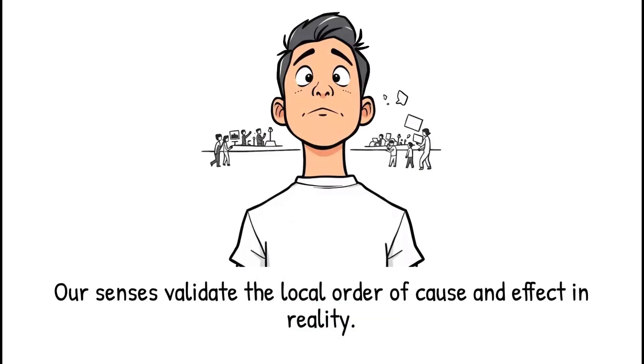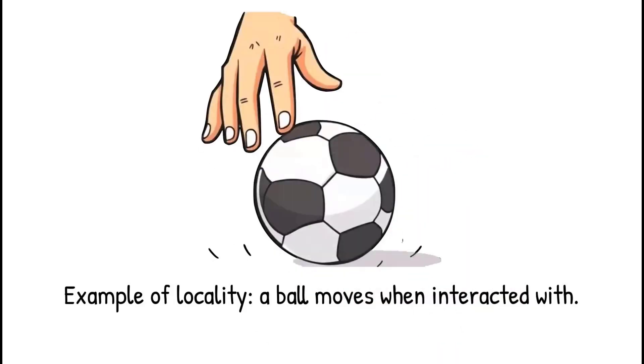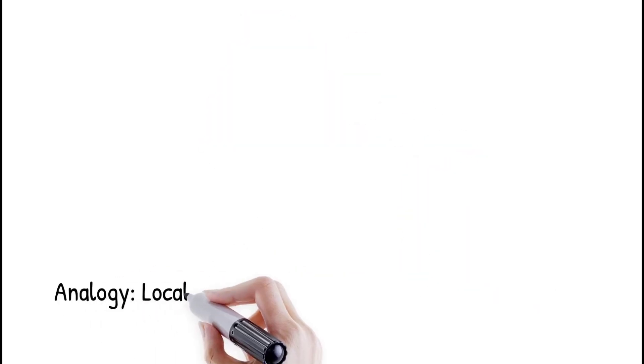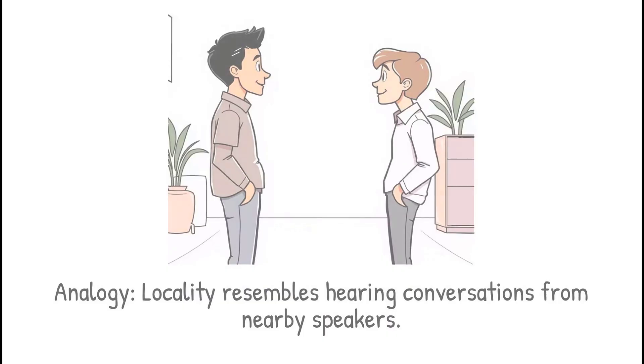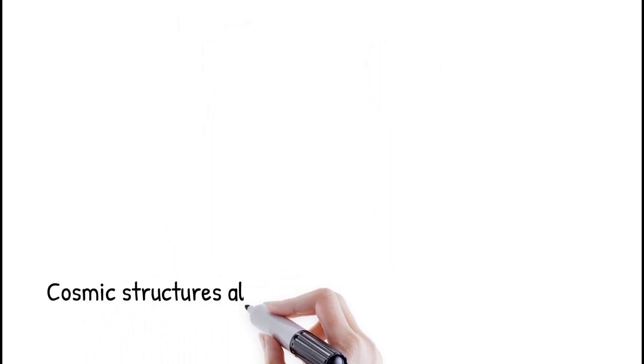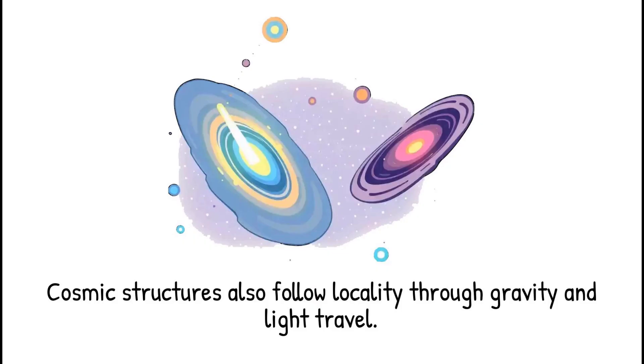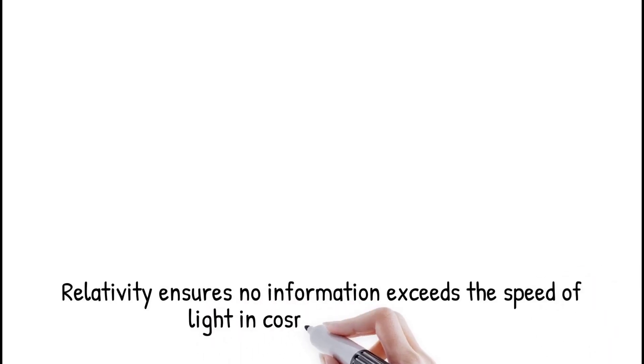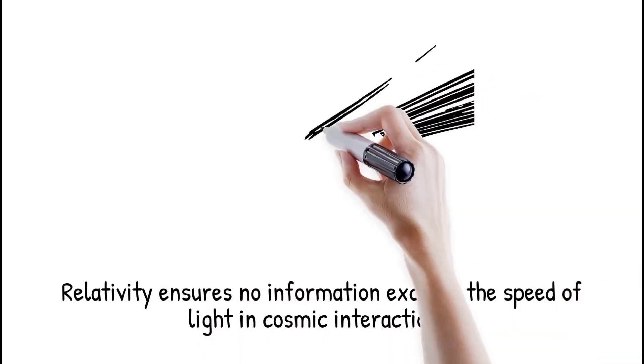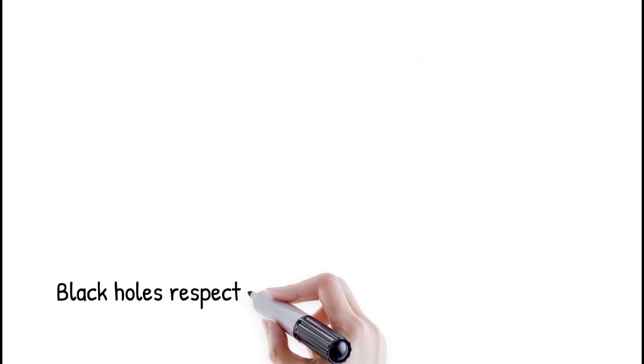A ball only rolls when your hand touches it or the wind pushes it. Locality is like conversations. You hear words only when someone nearby speaks to you. Cosmic structures also follow locality. Galaxies interact through gravity. Light travels finite distances, and signals from stars take years to reach us. Relativity reinforces that no information can exceed the speed of light. This makes cause and effect predictable across cosmic distances. Even black holes obey this rule, with their event horizons marking the ultimate limit of locality.